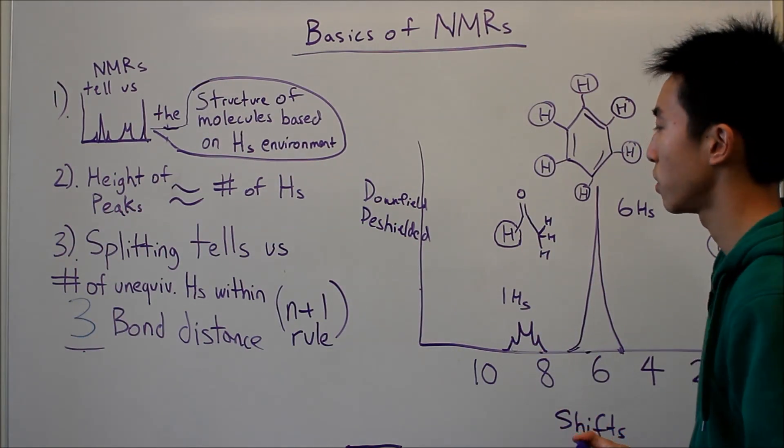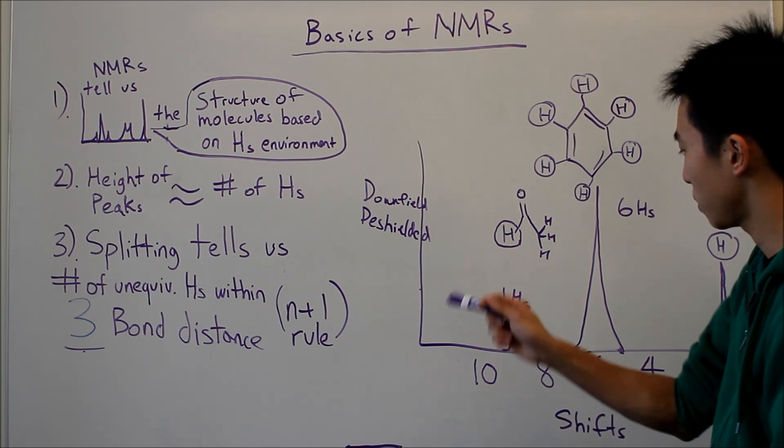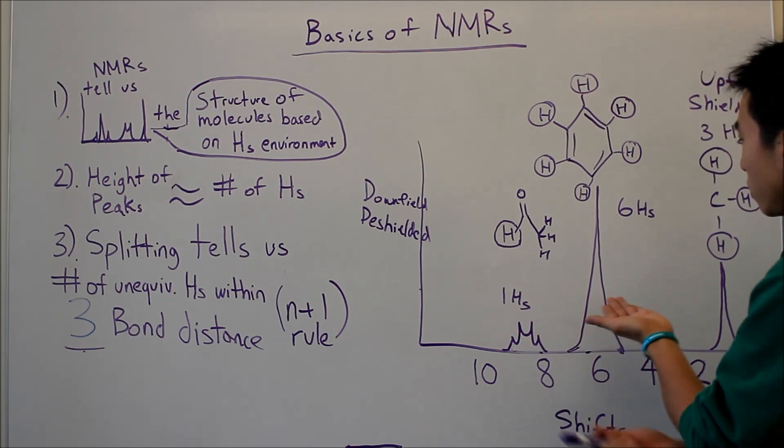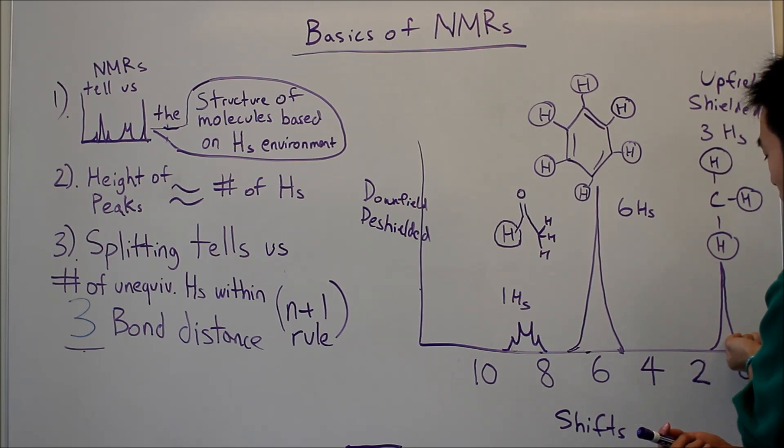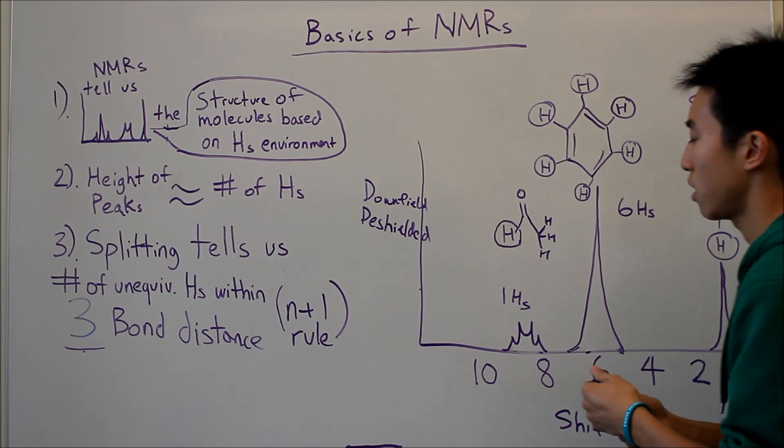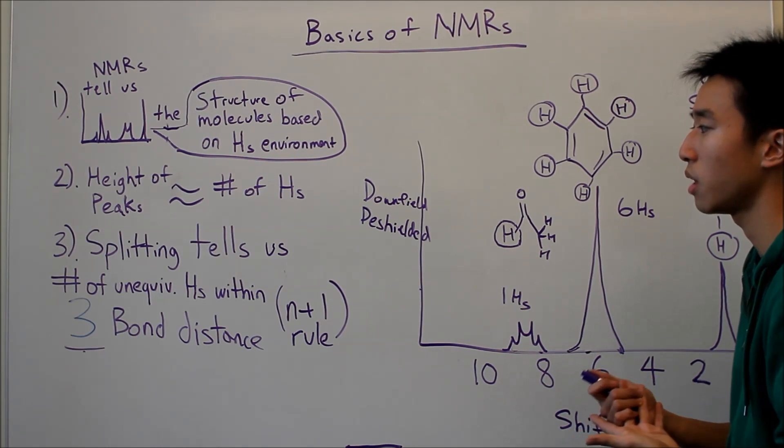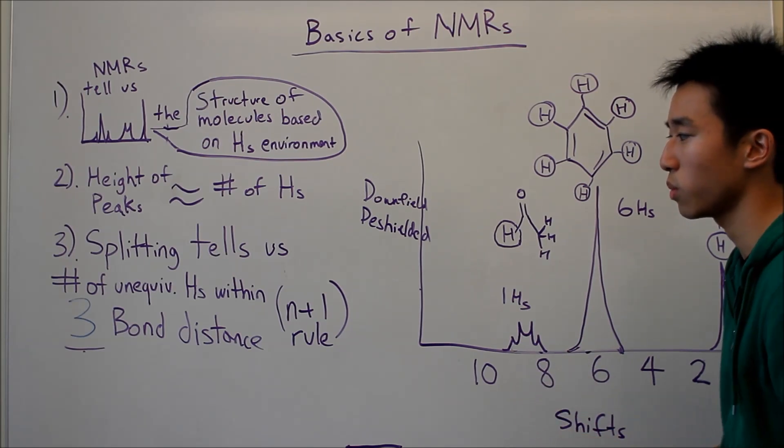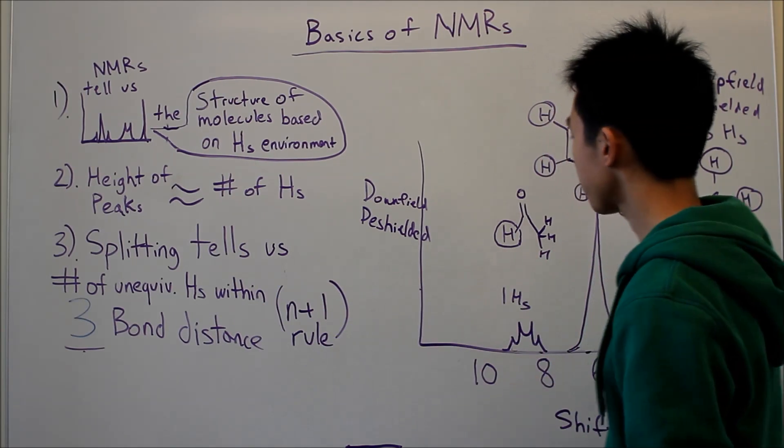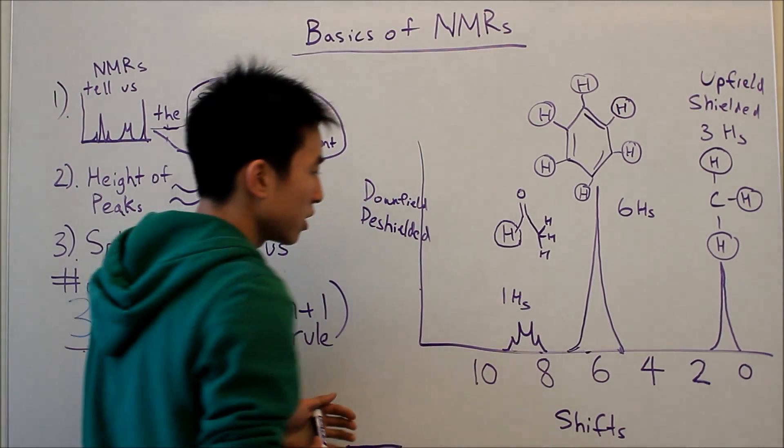Next. Splitting. So, what splitting is basically what you see over here. Normally you're used to seeing a whole peak here, and then basically it tells us the number of unequivalent hydrogens within three-bond distance. So, let's look at this example here.